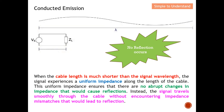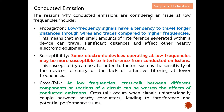Conducted emission is considered a big issue at low frequency mainly because of propagation — due to the free space path loss equation, low frequency signals have a tendency to travel long distances. The lower the frequency, the farther it can propagate. This is a big issue because low frequency signals tend to travel longer distances through wires and traces compared to higher frequency signals, which experience higher loss and become weaker.